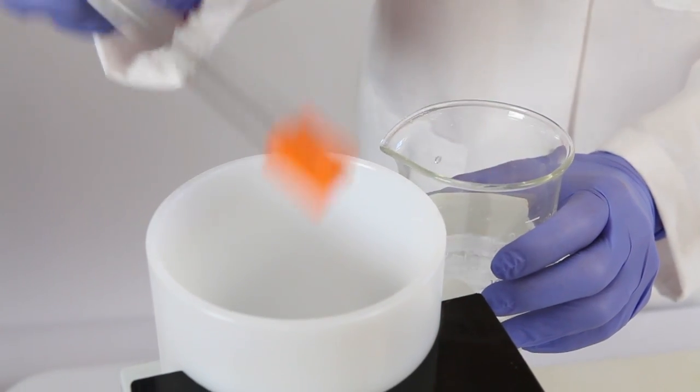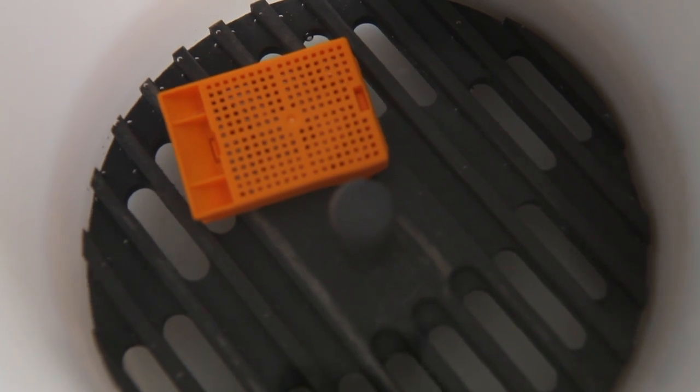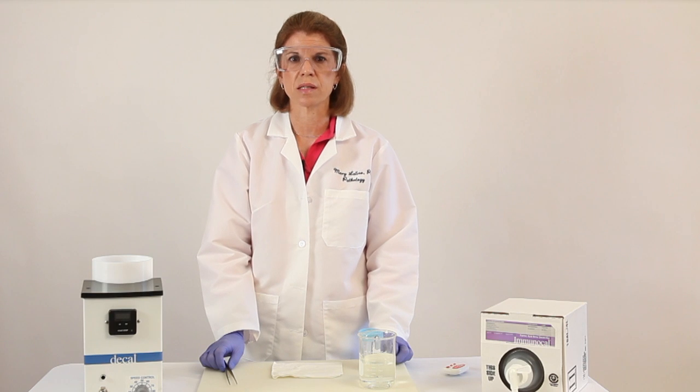So now I'm going to put the specimen into Immunocal. I use a magnetic stirrer with a bar that constantly spins. It keeps the solution moving, so more ions make contact with the specimen, which speeds up the process.